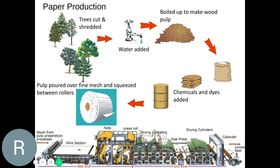Now let's get on to the production of paper. The first step is cutting down those trees and shredding them into fine chippings. Water is then added to those fine chippings and boiled up to make a wood pulp — wood pulp looks like oatmeal or porridge. A variety of chemicals and dyes can be added to create a certain type of paper or colour. That pulp is then laid out over a fine mesh and passed between big rollers, which squeezes all the water out and combines those wood fibres together to make a very thin paper. That's the general process.